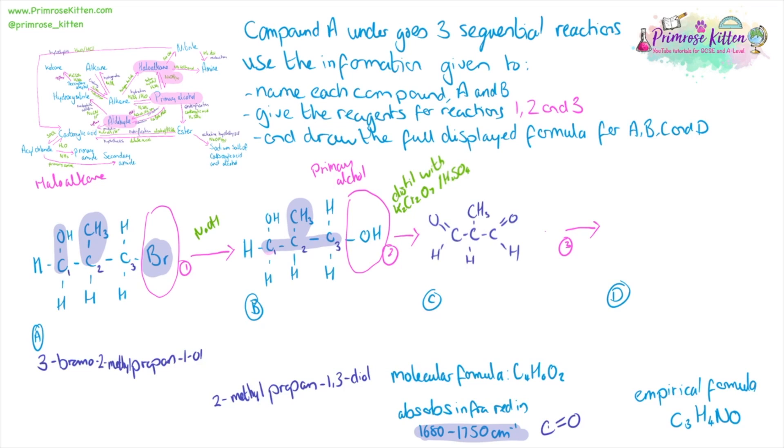To go from a primary alcohol to an aldehyde, we're going to need to distill it with acidified potassium dichromate. Now, D has the empirical formula C3H4NO. Now we've already got two oxygens in our aldehyde, and from our aldehyde it's a logical assumption to take us to hydroxynitrile. Now with a hydroxynitrile, you add on a CN group. If we're adding on the CN group, it's logical to assume that the molecular formula is twice that of the empirical formula. Then we will keep our two oxygens. We will go from four carbons to six carbons, four being in compound C and two extra ones being added on from the reagent.